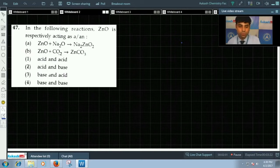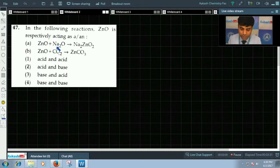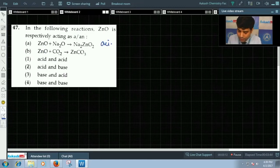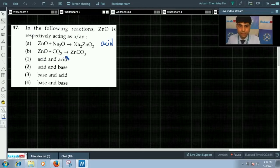In the second case, ZnO plus CO2 gives you ZnCO3. As we know, zinc oxide is amphoteric in nature. In the first reaction, sodium oxide is a base, hence zinc oxide must be reacting as an acid. As we know, carbon dioxide is acidic oxide.